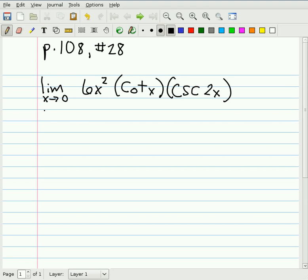The first thing I like to do is convert my cotangent and cosecant factors into factors involving cosine and sine. The cotangent can be written as cosine of x over sine of x.